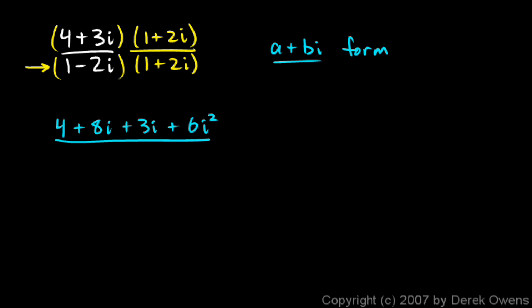And then all of that is over my denominators multiplied together. So let's do a FOIL there. 1 times 1 is 1. And then the outer, 1 times 2i is just 2i. And then the inner, I have minus 2i times 1. So that's minus 2i. And then the last, I have minus 2i times positive 2i. That's a negative 4i squared.